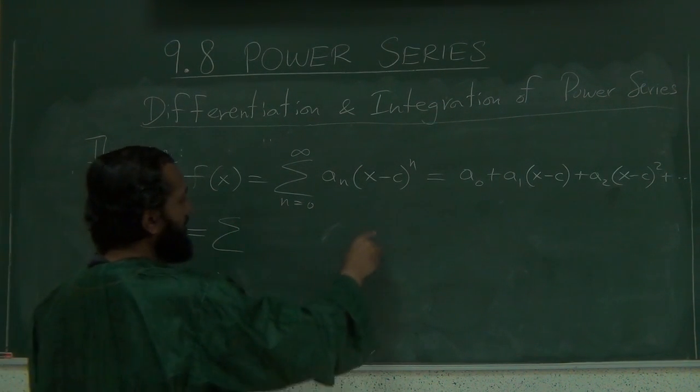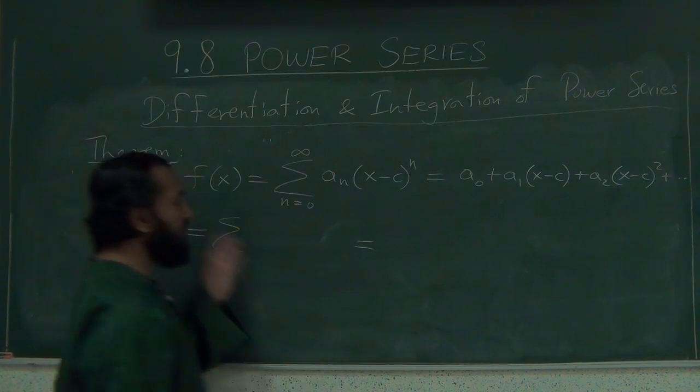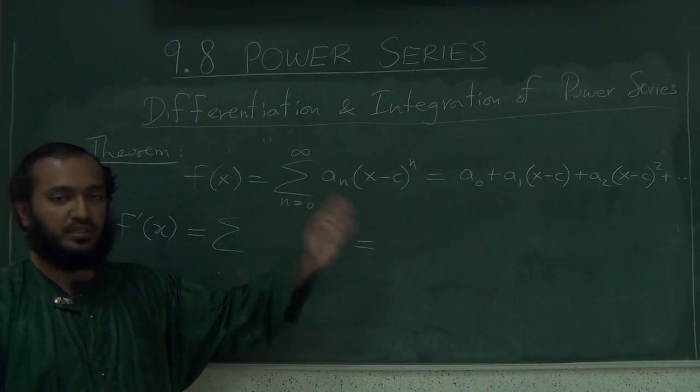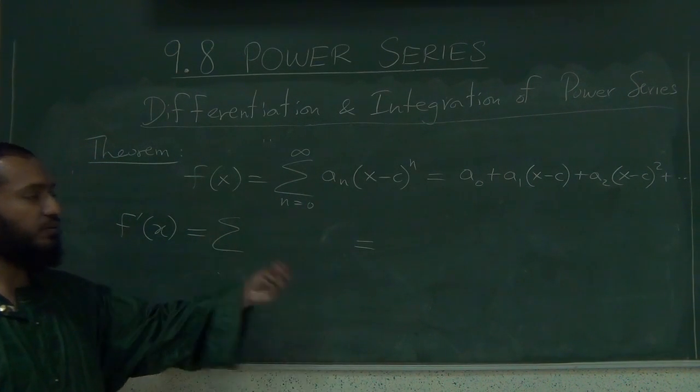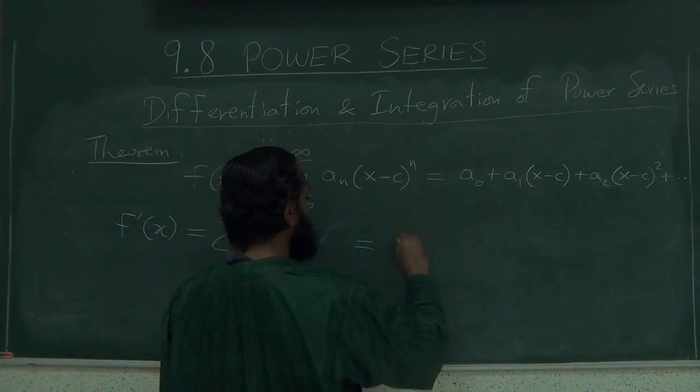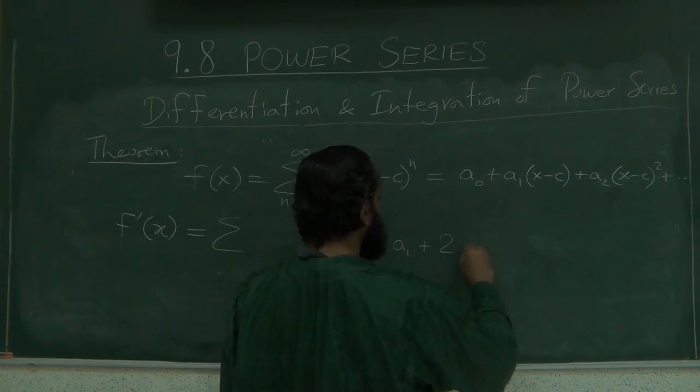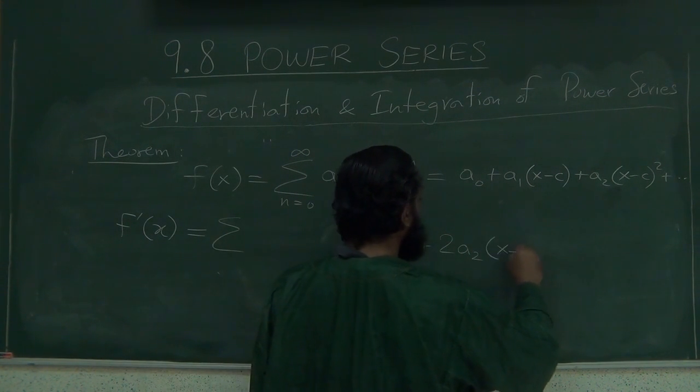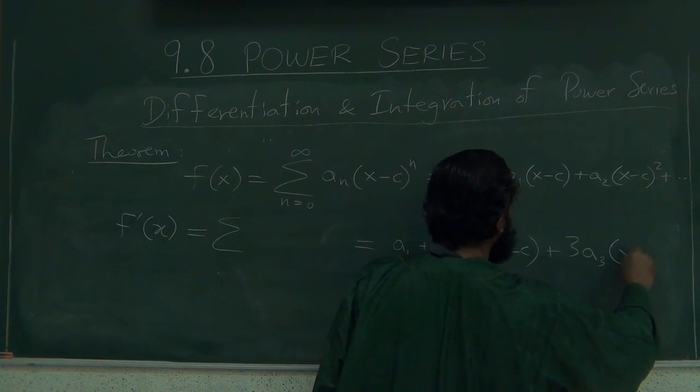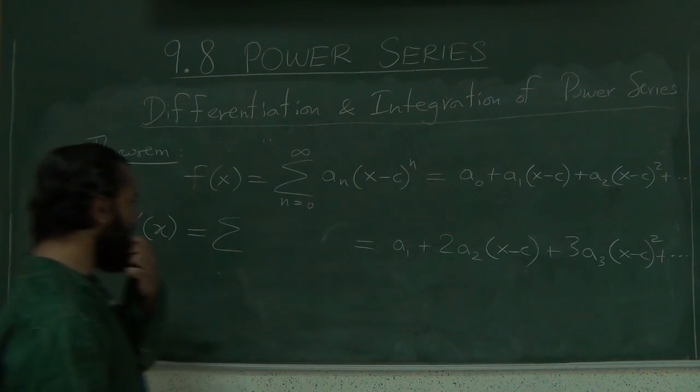So before we write down the sum, let's look at it over here. So the derivative will, basically what the theorem is saying is you take the termwise differentiation. You take the derivative of one term at a time and that will give you the derivative. So derivative of this is 0, derivative of this is just a_1 plus 2a_2(x minus c) plus 3a_3(x minus c) square, right?